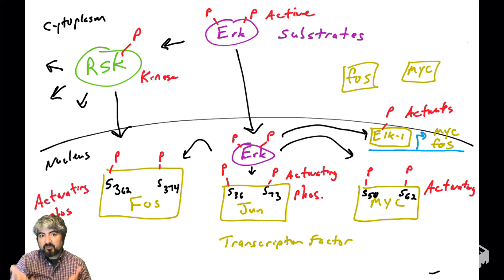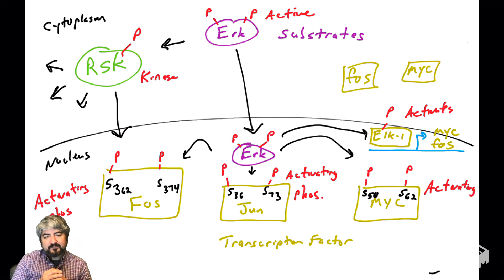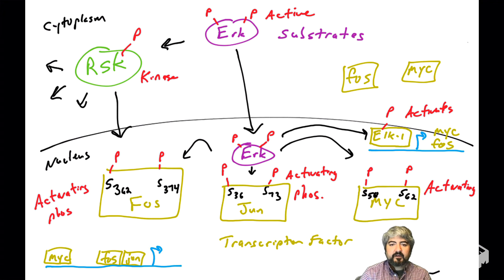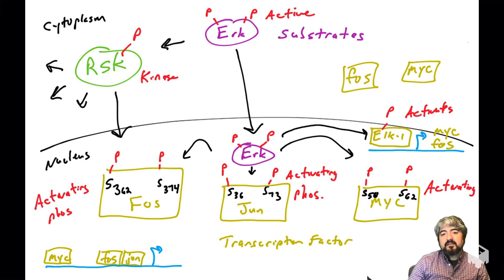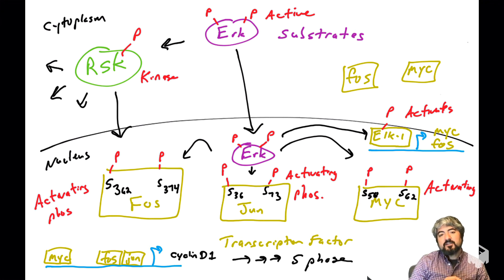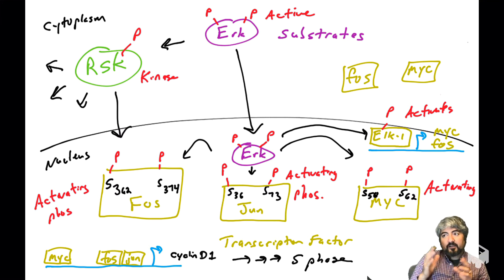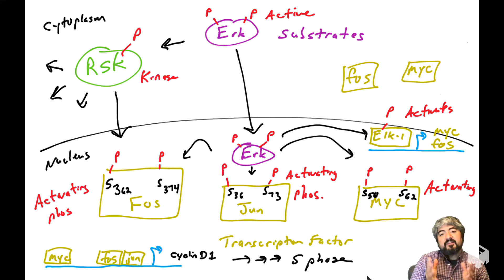ERK really wants these proteins present in high amounts and phosphorylated and active, so you can see how ERK can attack this problem multiple ways. The end result is that these transcription factors — FOS, JUN, and MYC — are phosphorylated and active, they bind promoters and turn genes on. One key gene we'll definitely talk about in a later video is the cyclin D1 gene, which is the key gene that will push the cell from G1 into S phase. The ERK pathway feeds into all these transcription factors, which feed into the production of cyclin D1 protein via turning on the cyclin D1 gene.